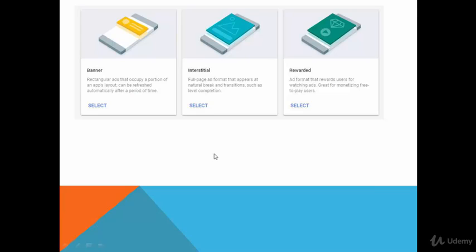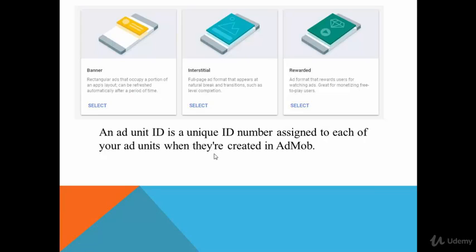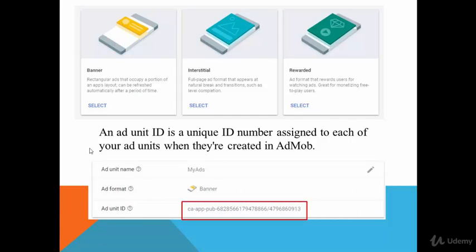After you select your advertisement type, you will get something called a Unit ID. Don't confuse the Unit ID with the Application ID. The Application ID is assigned to your whole app, but for each advertisement you create in Google AdMob you will also get a Unit ID. The ad unit ID is a unique number assigned to each of your ad units when they are created in AdMob. For example, I created an advertisement called 'My Ad', selected the banner format, and received this unit ID. I will show you how to do this practically in the next videos.